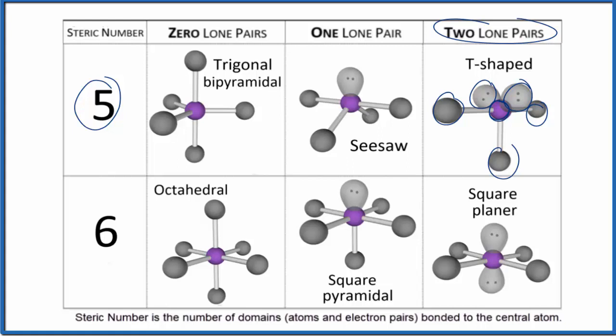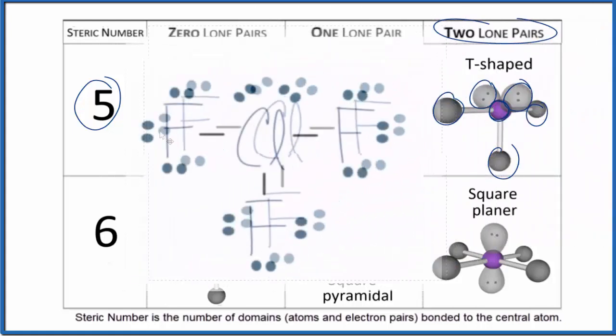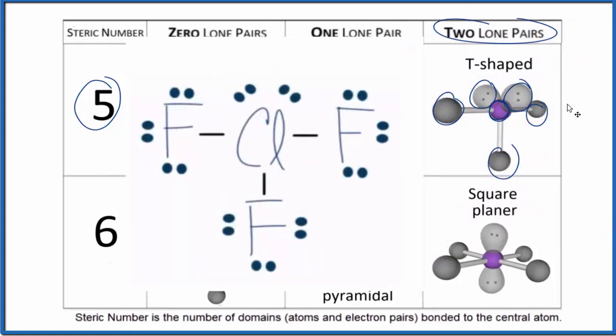A good example of this is ClF3. So here's our chlorine trifluoride, and we can see we have one, two, three atoms, and then the two lone pairs. There's one lone pair and one lone pair there. So that's what gives us the T-shaped molecular geometry.